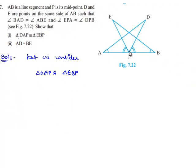He has given that P is the midpoint of AB. So we can write AP is equal to BP, since P is the midpoint of AB.